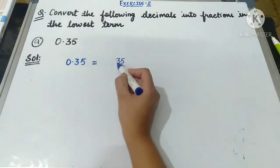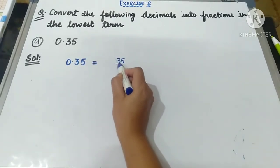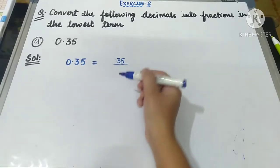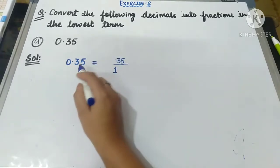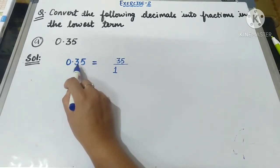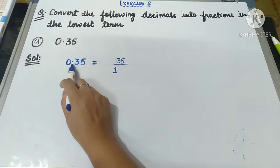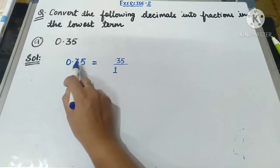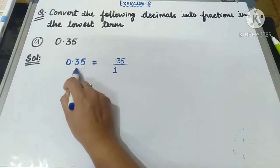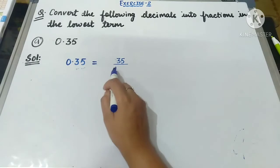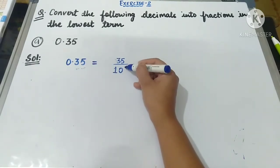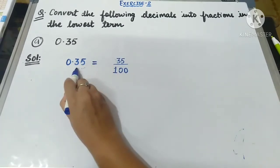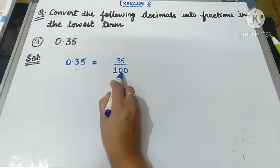Whatever number is given, first we write it in the numerator. Then in the denominator, we write 1 and then count how many decimal places are there after the decimal point. We write as many zeros after the 1 as there are decimal places. Here there are two decimal places, so we write two zeros in the denominator — making it 100.